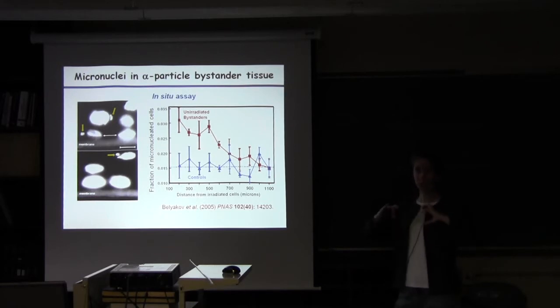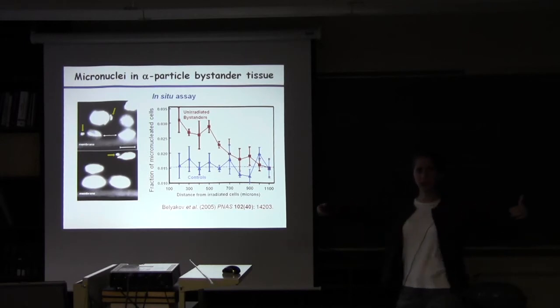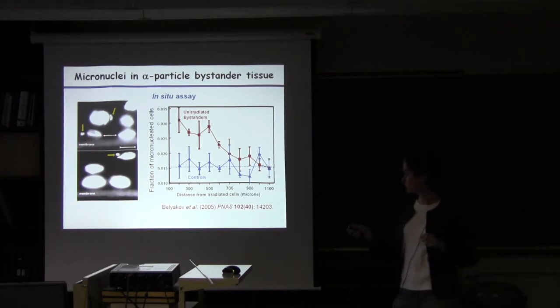But now looking in something approximating a three-dimensional tissue construct. So again, it's not intact, it's not a whole animal, but it is a good model using human cells growing in that sort of life-like architecture. So you have a three-dimensional construct and we're looking at what signaling goes out from the irradiated cells and how far into the 3D tissue it might go.